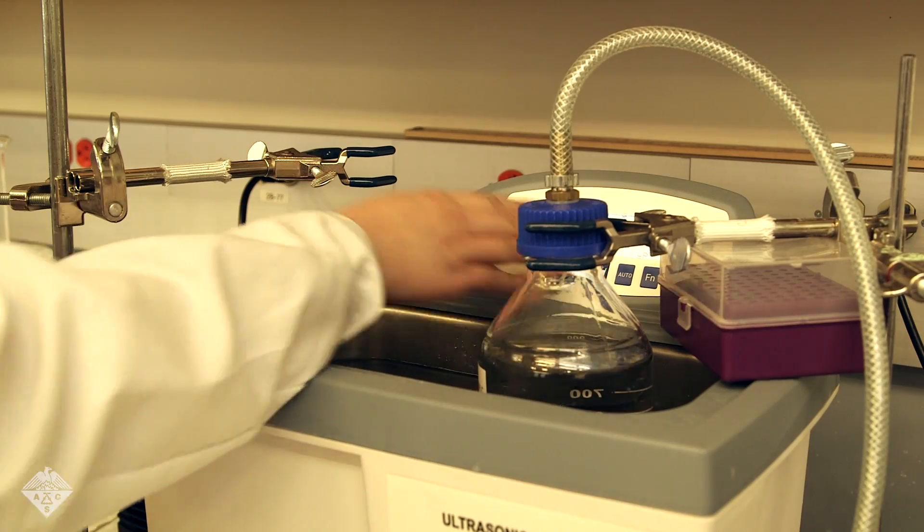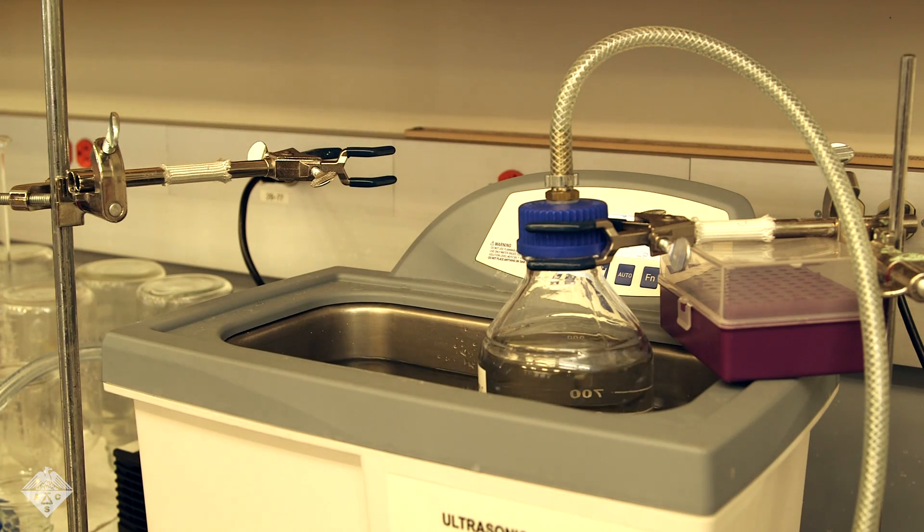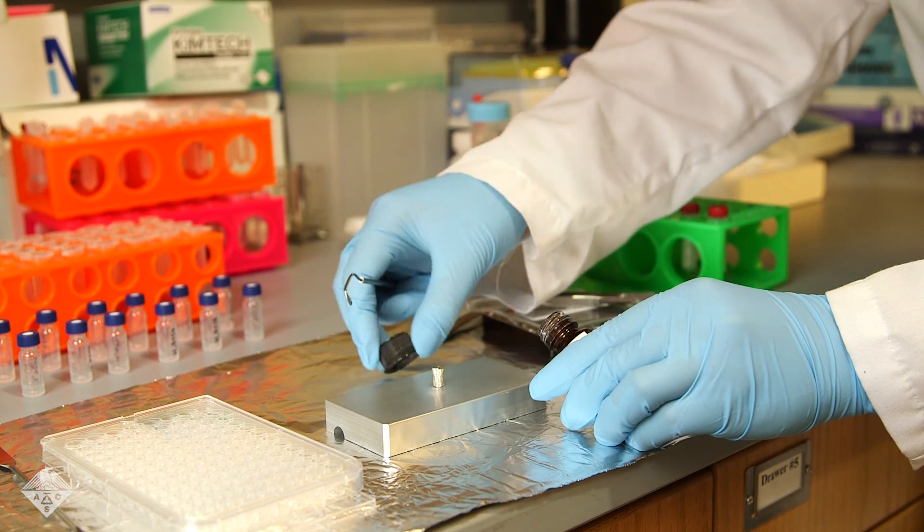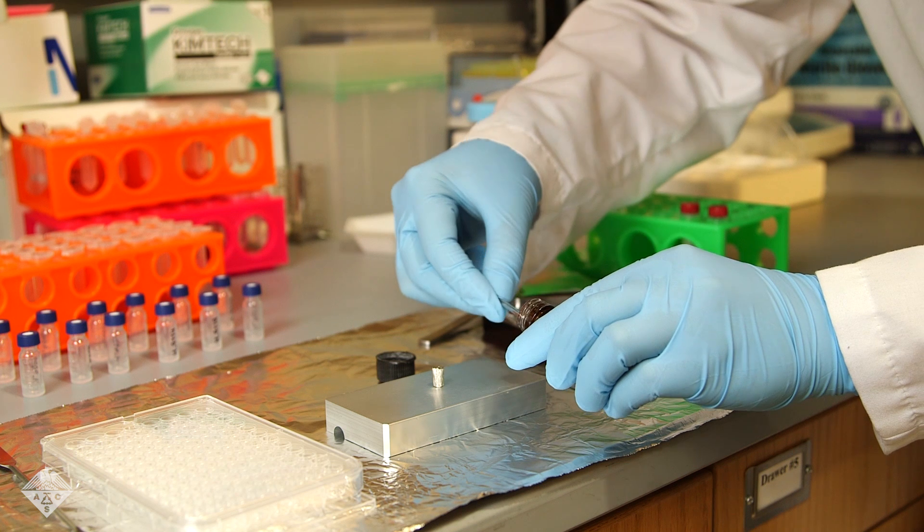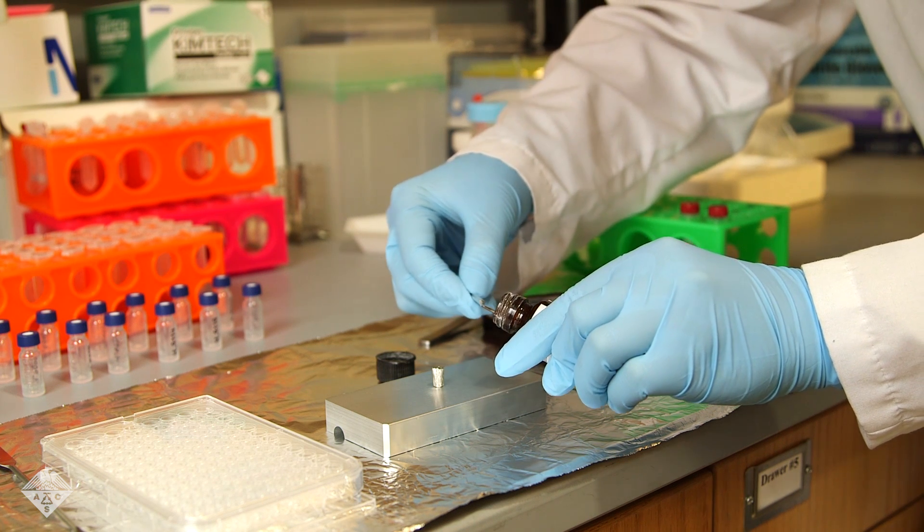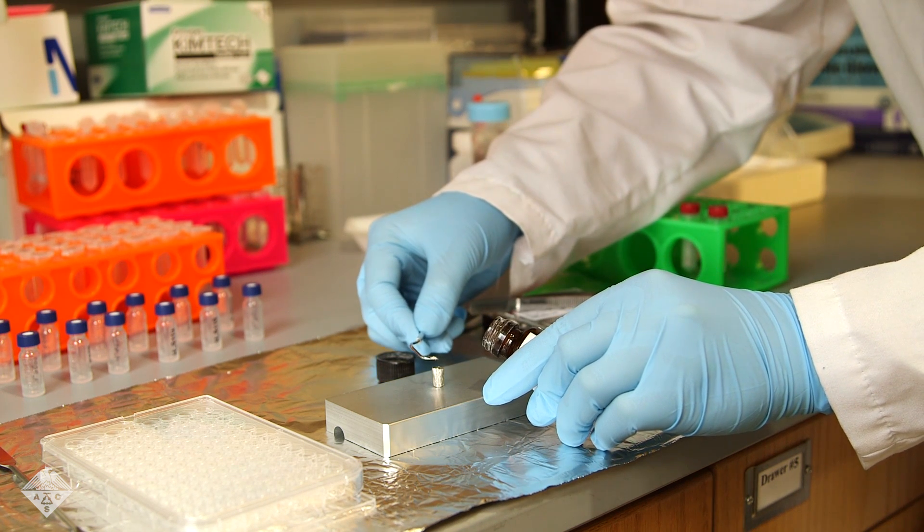Using liquid chromatography in conjunction with isotope ratio mass spectrometry, the researchers measured the ratio of isotopes, atoms of the same element that have differing number of neutrons, found in keratin, the primary constituent of hair.